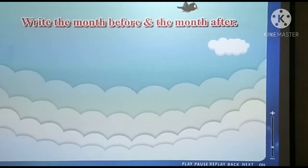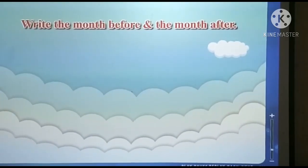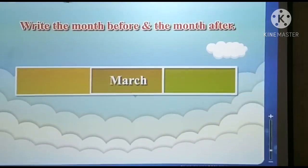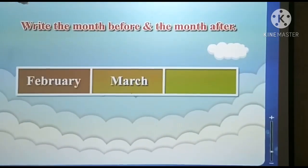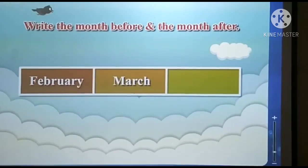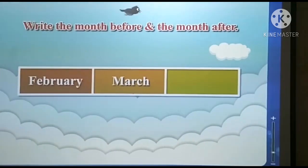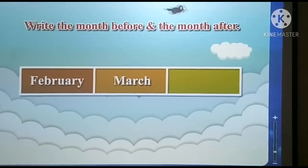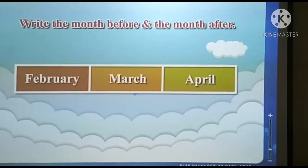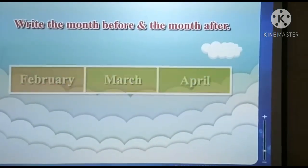The year begins with the month of January and ends in December, then a new year starts again in January. Now write the month which comes before and after. Which is the month before March? February. February month comes before March. Which is the month after March? April. April month comes after March.